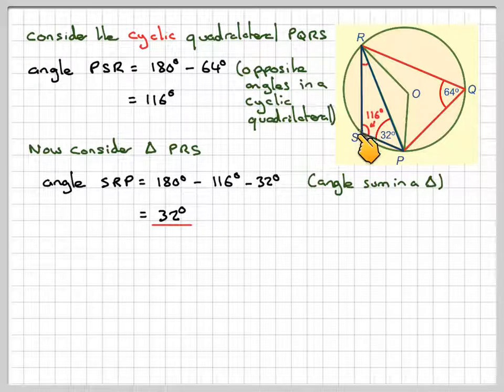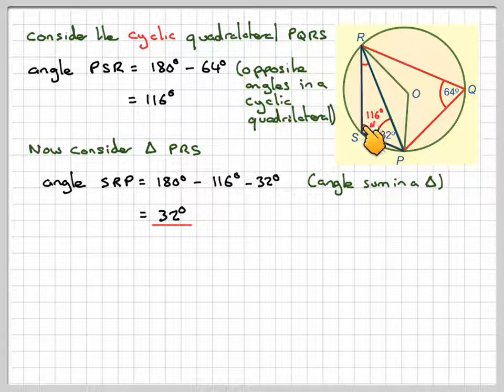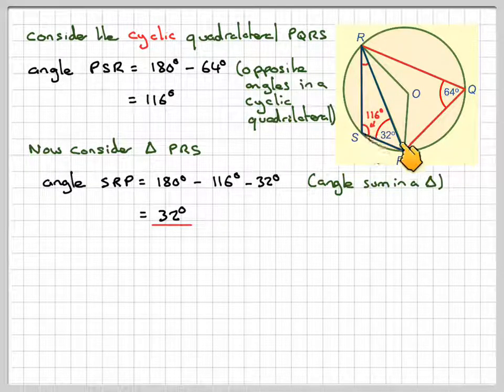Although it doesn't look like it from the drawing, this triangle here is also isosceles. This is 32 and this is 32, therefore this triangle must be isosceles, even though it doesn't look like it in the diagram.